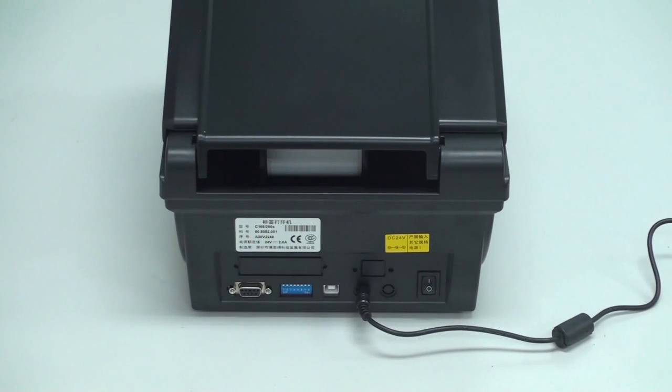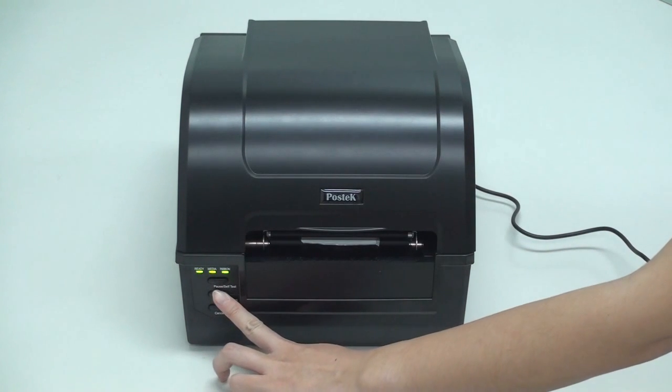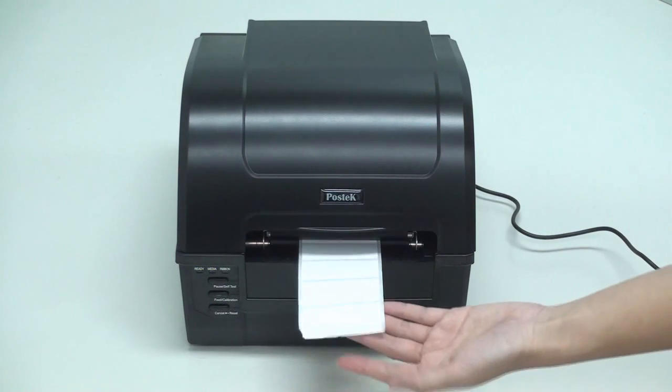You'll see the three indicator lights on the front panel light up. Press and hold the feed button for several seconds until the printer feeds three or more labels, and then release the feed button.